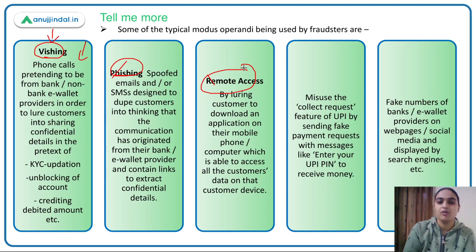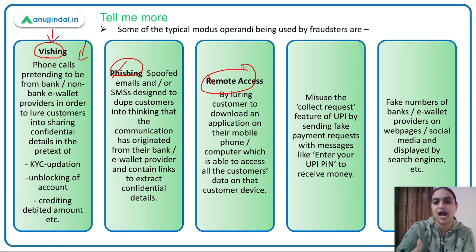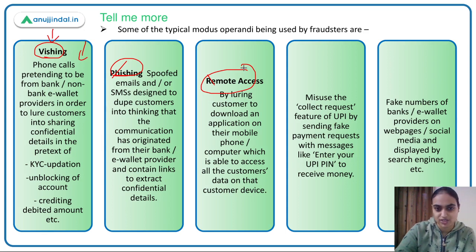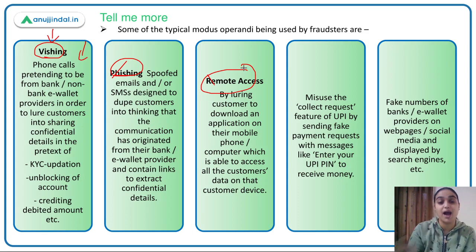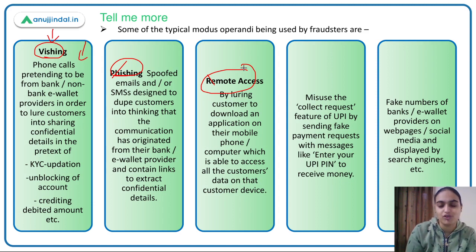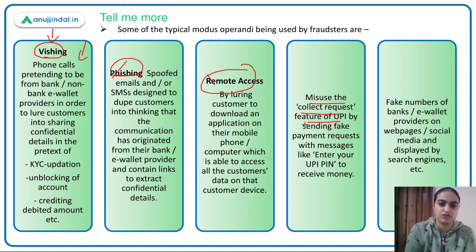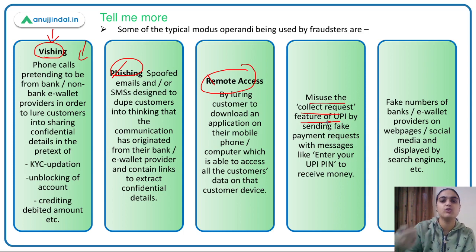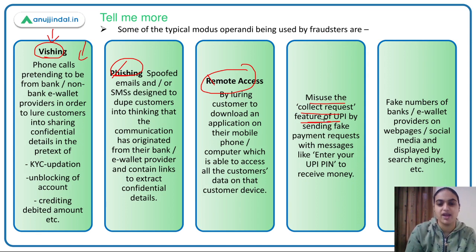The third technique is gaining remote access. Fraudsters get you to download certain applications, through which they are able to access all your data and device from another location. They then conduct transactions and withdraw money from your account. They also misuse the UPI collect request feature — sending fake requests claiming you must enter your UPI PIN to receive money, but actually your money gets withdrawn and transferred elsewhere.